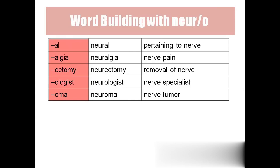'Neural' means pertaining to the nerve. 'Neuralgia' means nerve pain. 'Neurectomy' means surgical removal of the nerve. 'Neurologist' is the nerve specialist. 'Neuroma' means nerve tumor. Key suffixes: '-oma' means tumor, '-itis' means inflammation, '-algia' means pain, '-ectomy' means surgical removal, '-ology' means study, and '-ologist' means specialist.